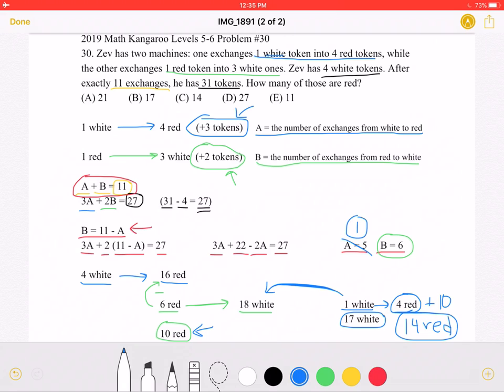So we know that this answer must be correct because the problem states that at the end of 11 exchanges, he has 31 tokens and 17 plus 14 is equal to 31. So this means that there must be a total of 14 red tokens, which is answer choice C.